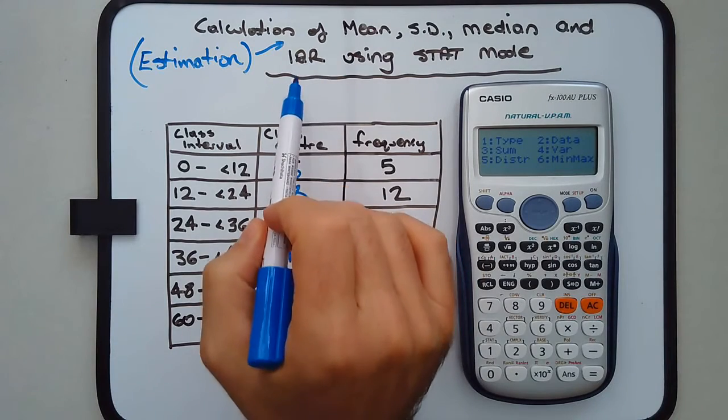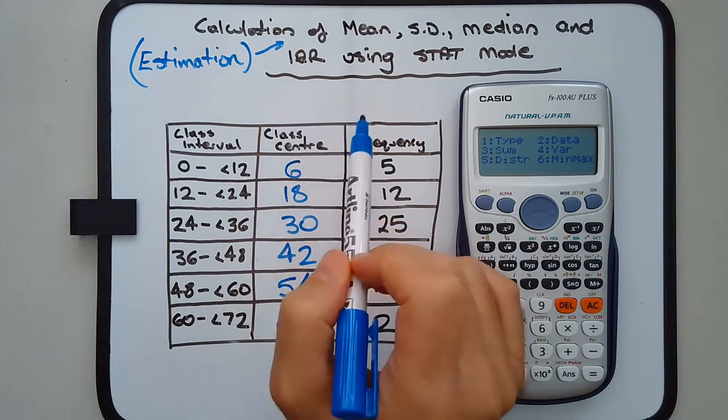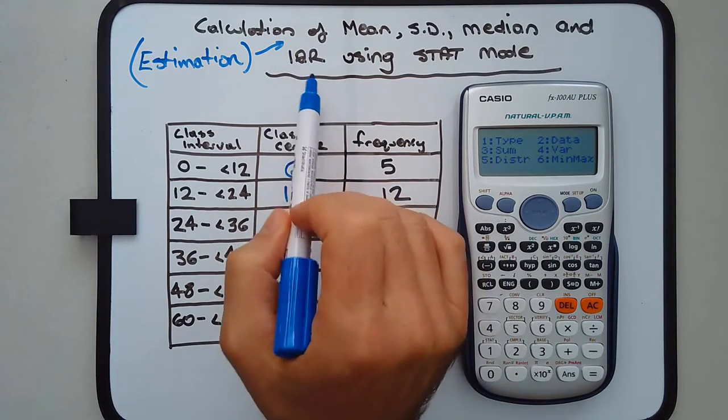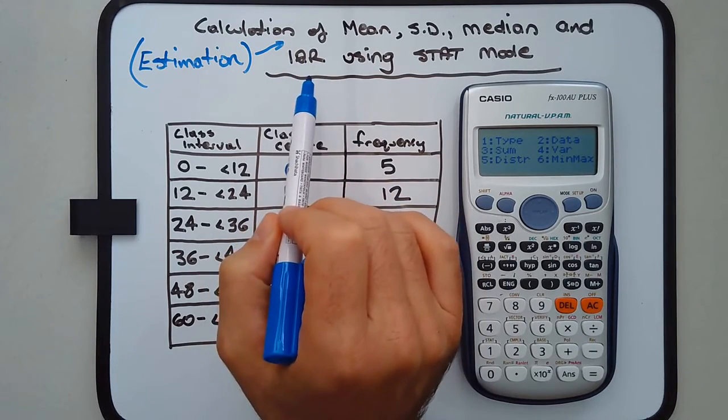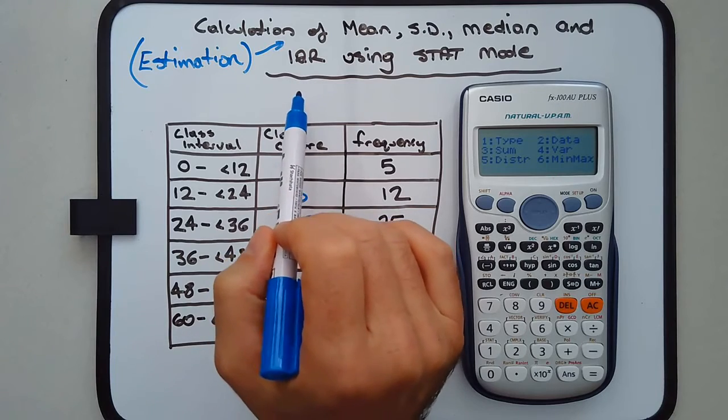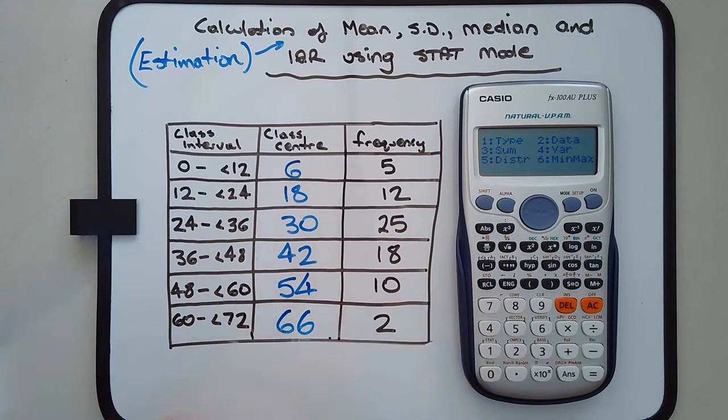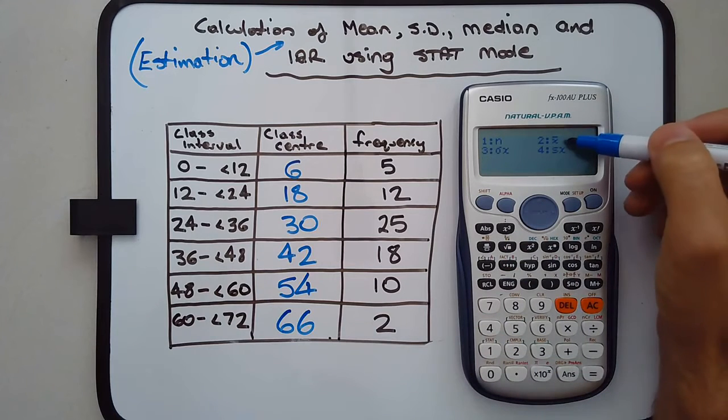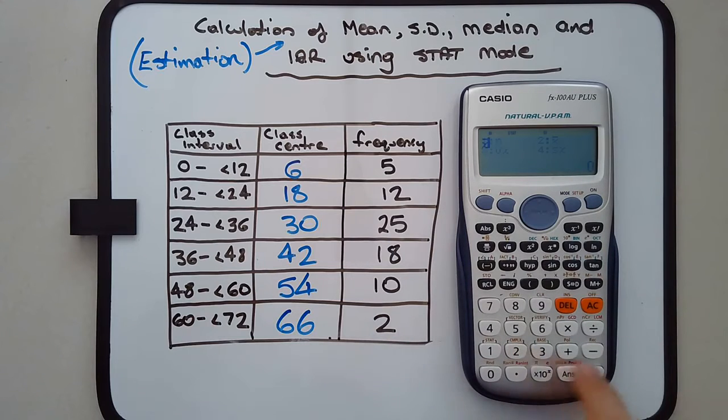Q1 and Q3 - the first quartile and third quartile - which we use to calculate the interquartile range. The calculator won't do the IQR directly, but it gives you the quartiles, which is just a matter of subtracting one from the other. Let's press 4 for VAR. This one here, X bar, is the mean of the data. Press 2.